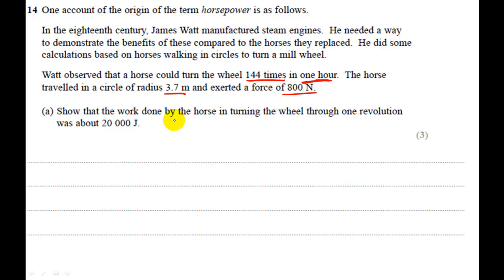Right, show that the work done by the horse in turning the wheel through one revolution was about 20,000 joules. Right, one revolution. Okay, so what we need to do, firstly, is to try and visualize what the question is talking about.